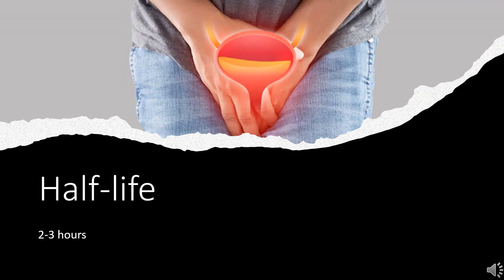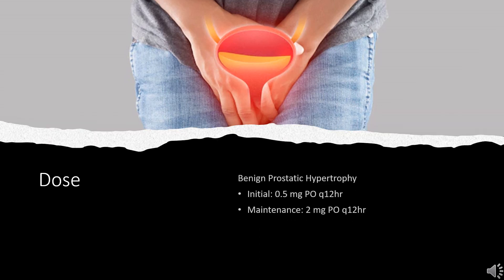Half-life: the plasma half-life is about 2–3 hours. Dosing for hypertension: initial dose is 1 mg PO Q8–12 hours; maintenance is 6–15 mg per day divided 2 or 3 times daily. Alternatively, 1–5 mg PO BID, may increase dose to 20 mg per day in divided doses; patients may benefit from up to 40 mg per day in divided doses. PTSD-related nightmares and sleep disruption (off-label): initial dose is 1 mg PO QHS.